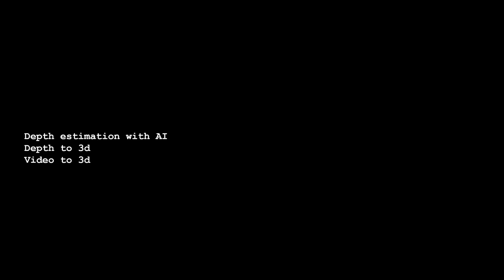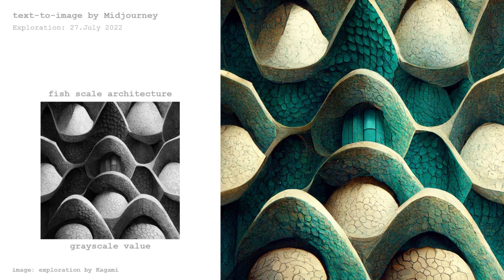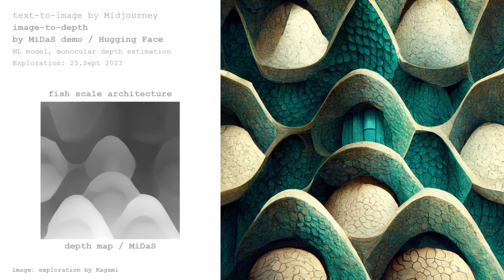Depth Estimation with AI — Depth to 3D, Video to 3D. Until now, simple grayscale values were used for the depth map. Here you can see some depth estimation technologies by AI such as Midas, ZoeDepth, and Marigold. This grayscale depth image from the previous slides is compared to a depth map generated by the AI depth estimation tool Midas, which is demonstrated in the demo space of Midas on the AI platform Hugging Face.